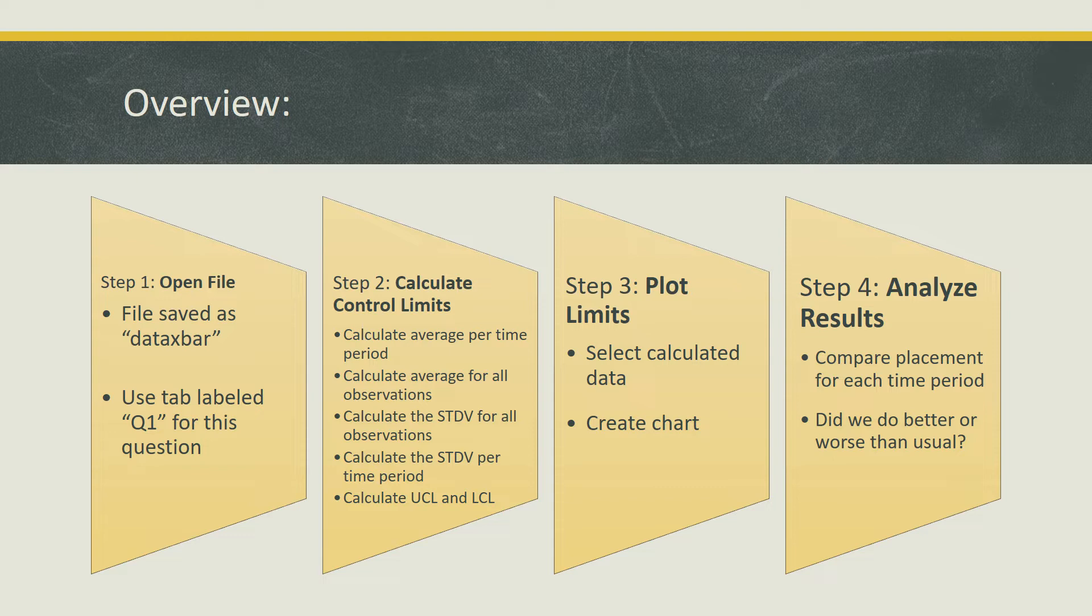The second step, calculating control limits, will be broken down into five categories. The first step is calculating the average per time period. Next is calculating the average for all observations, followed by calculating the standard deviation for all observations and standard deviation per time period. Next, we will calculate the upper control limit and the lower control limit.